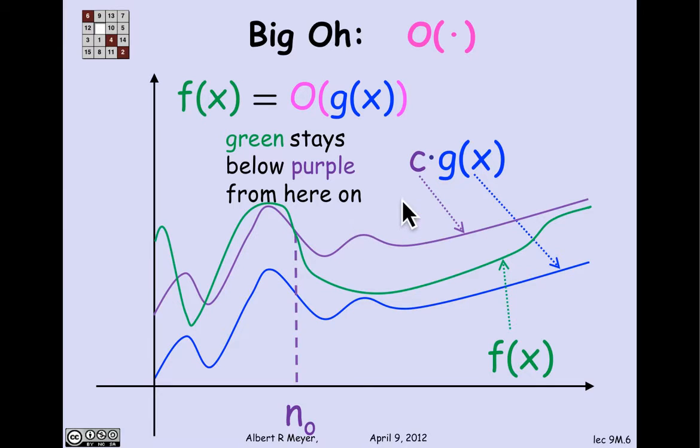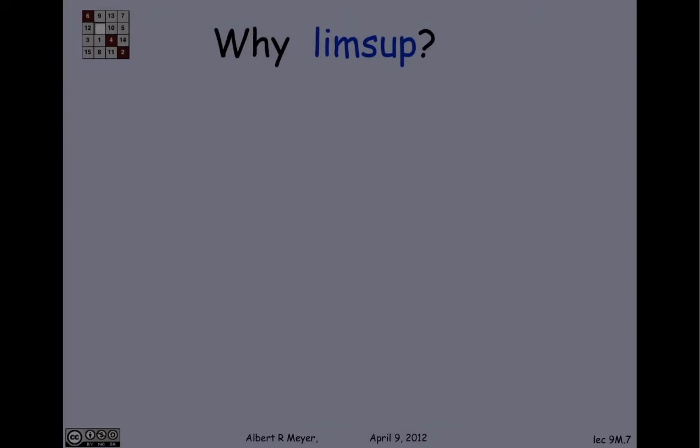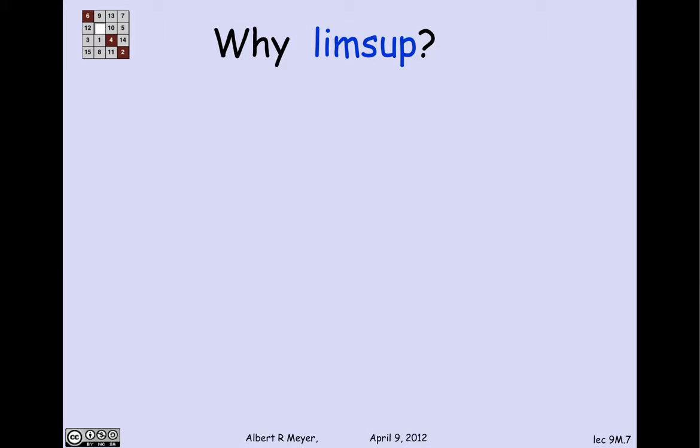Now, of course, multiplying the blue curve g by a constant doesn't raise it up a fixed amount. It alters it. But if we imagine that our curve was a log scale, then in fact multiplying g by c is the same as adding log c on a log scale. So the picture is actually accurate if the vertical scale is logarithmic. So using this standard definition, I can explain why in the equivalent definition in terms of limit, I couldn't say limit. I needed to say limsup.